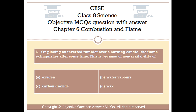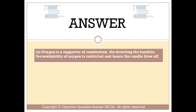Question number 6: On placing an inverted tumbler over a burning candle, the flame extinguishes after some time. This is because of non-availability of — Option A: oxygen. Option B: water vapors. Option C: carbon dioxide. Option D: wax. The right answer is Option A. Oxygen is a supporter of combustion. On inverting the tumbler, the availability of oxygen is restricted and hence the candle blows off.